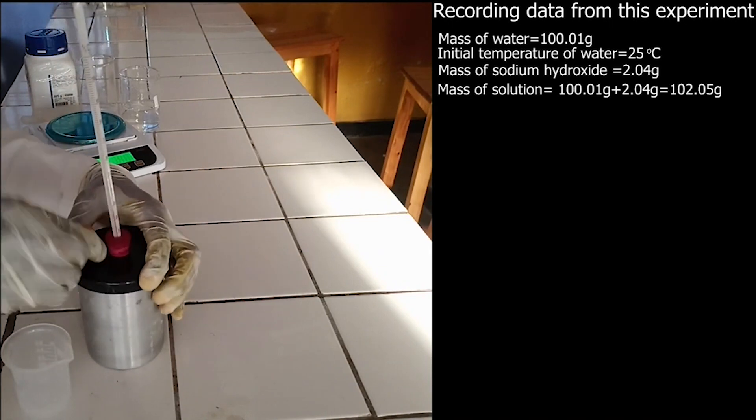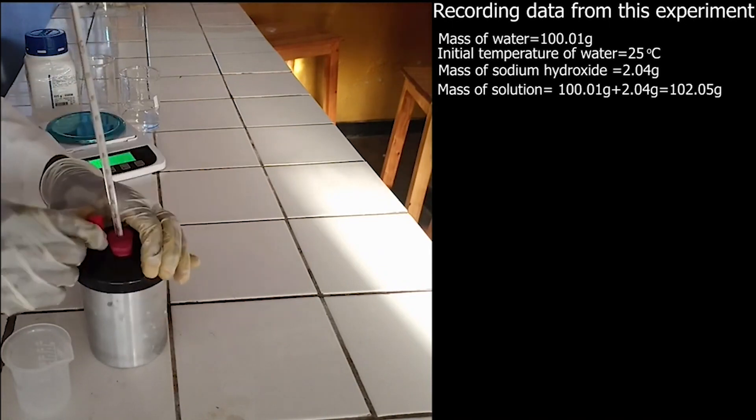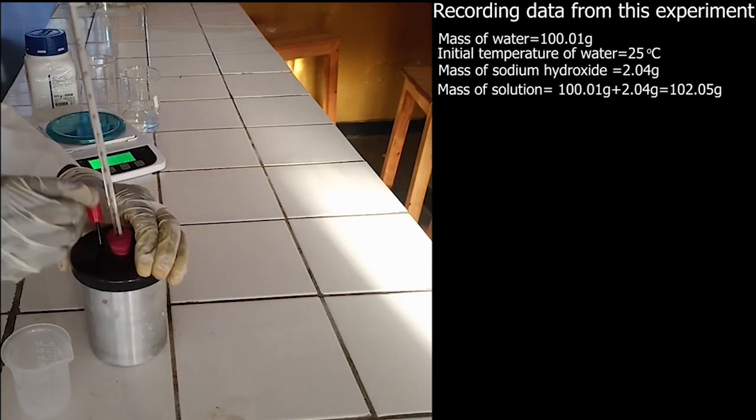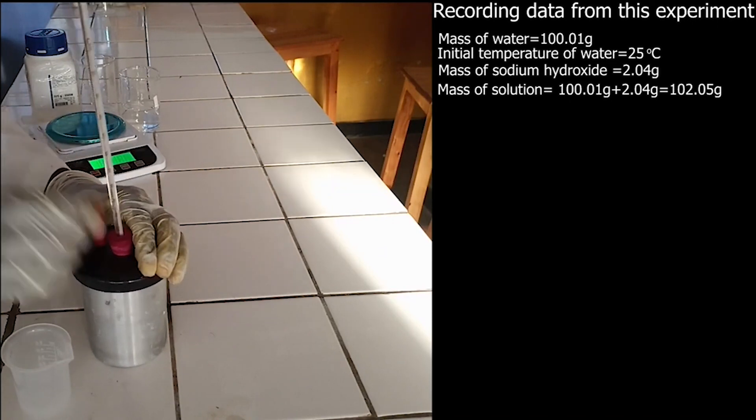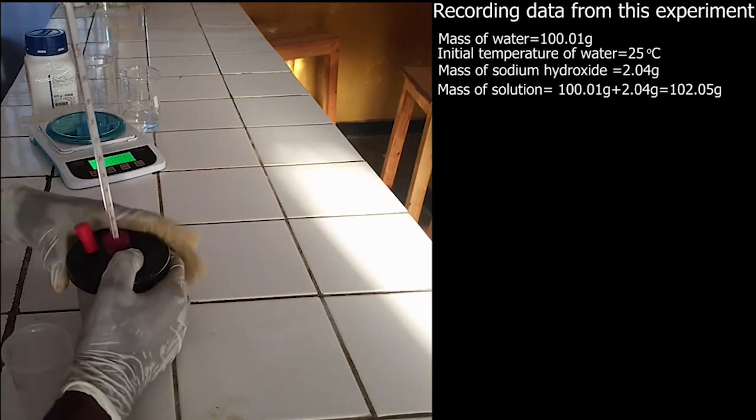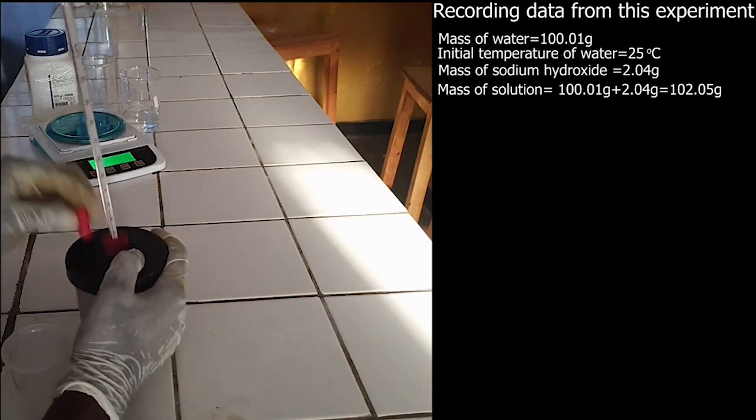Stir the solution to allow sodium hydroxide to dissolve fast. The total mass of solution is equal to mass of water plus mass of sodium hydroxide, hence the total mass of solution is equal to 102.05 grams.